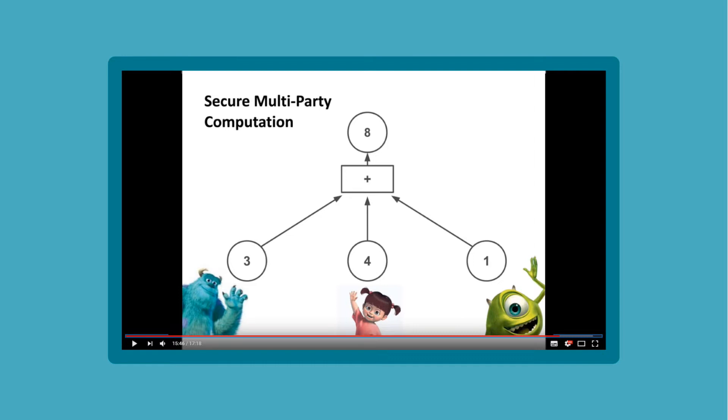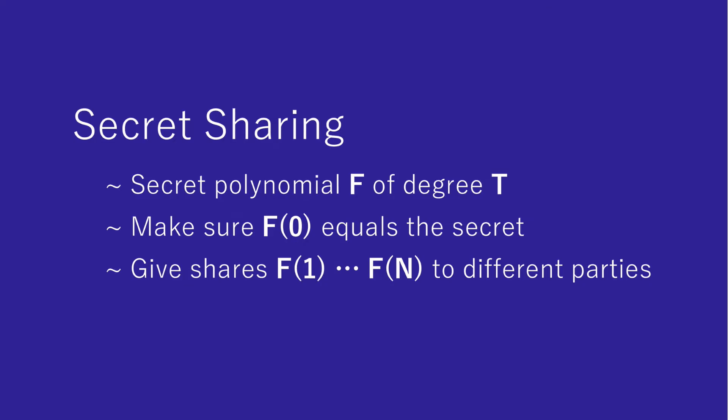However, since you need to understand the Shamir secret sharing scheme for this introduction, let me quickly recap. In this sharing scheme, we want to share some secret value. We do this by creating a secret polynomial of degree t such that f evaluates to the value of the secret.